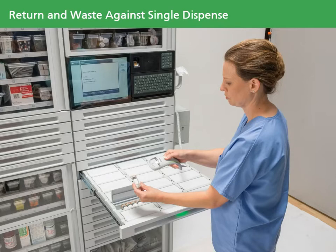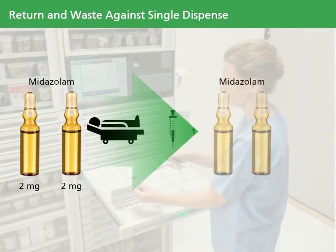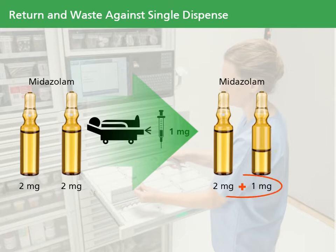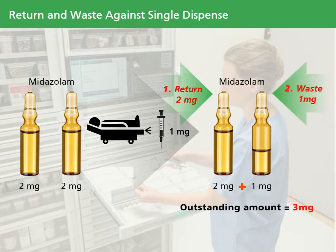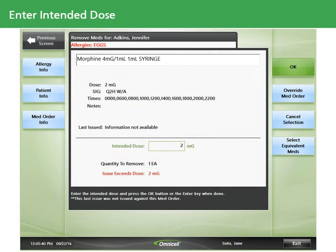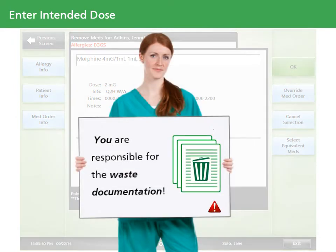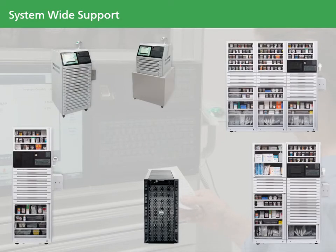If you remove two doses for the same patient in a single dispense — for example, two vials of midazolam 2 mg — and you only give your patient 1 mg, you'll need to document what happened with the remaining 3 mg. Remember that returns must always be completed first. Return 1 vial of midazolam 2 mg and waste the remaining 1 mg to close the PMA. During waste, you'll be required to enter the actual administered amount and the intended dose information needed to reconcile the account. This accounting is system-wide and allows you to waste and return medications on different cabinets as needed.